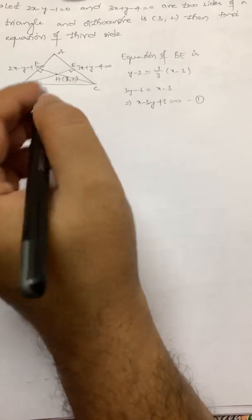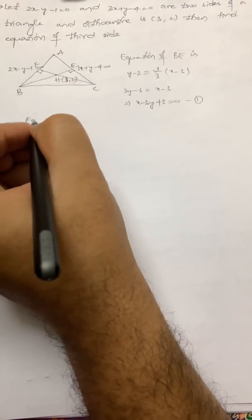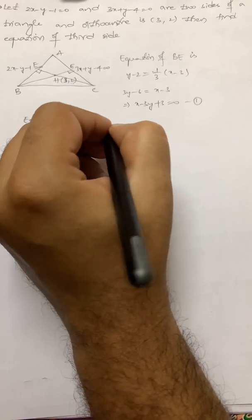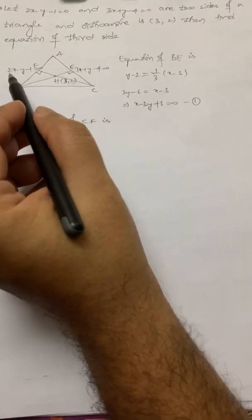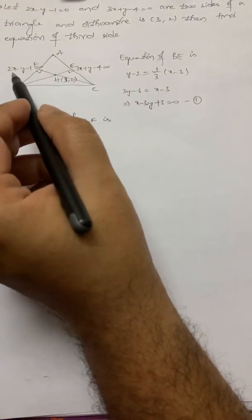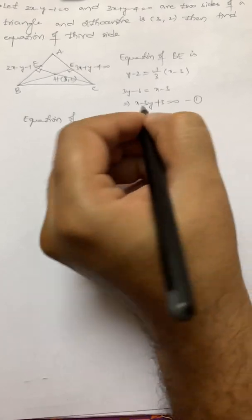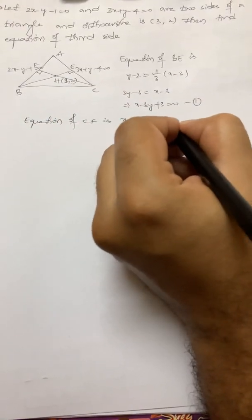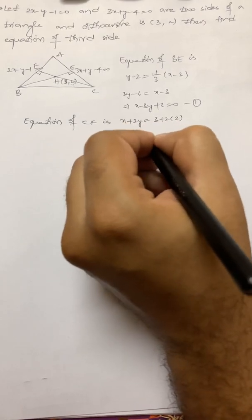So this is the equation of BE. Now we want the equation of CF. The altitude CF is perpendicular to 2x minus y minus 1 equal to 0, so its slope gives the form x plus 2y equals something. Since it passes through (3, 2): 3 plus 2 times 2 equals 7. So x plus 2y equal to 7.